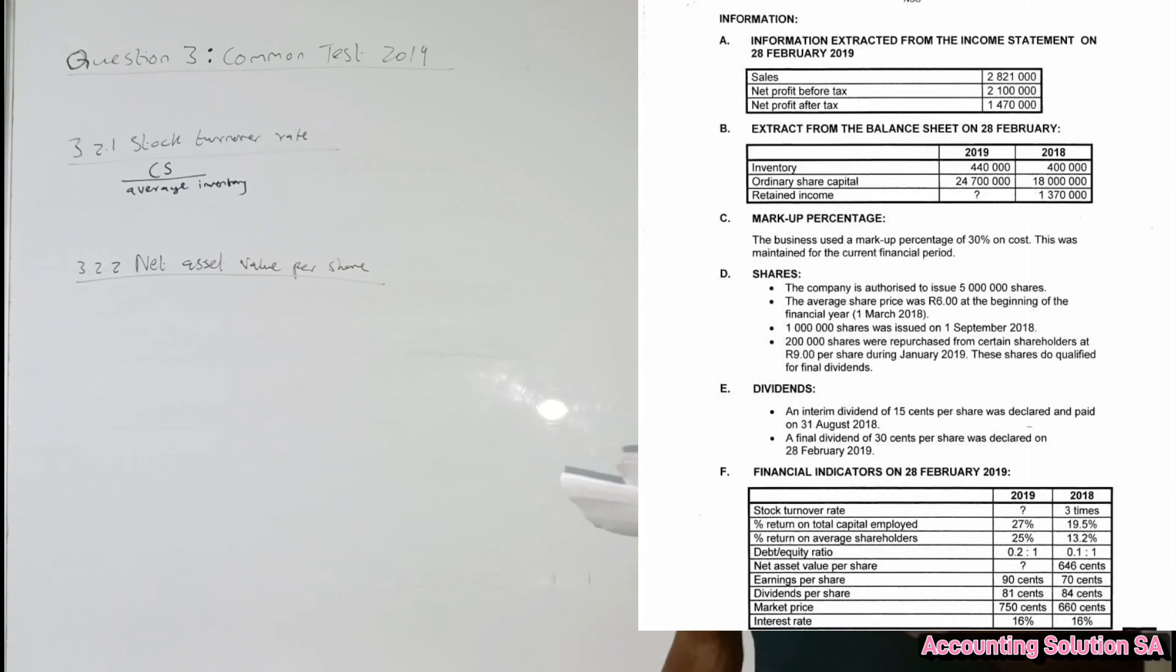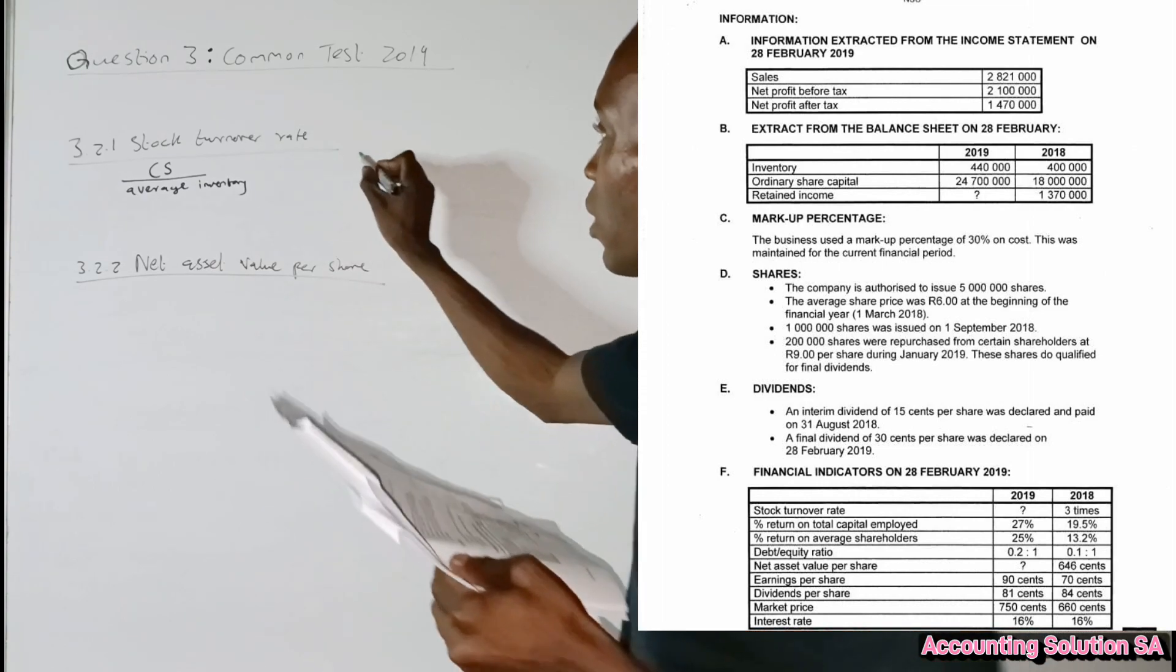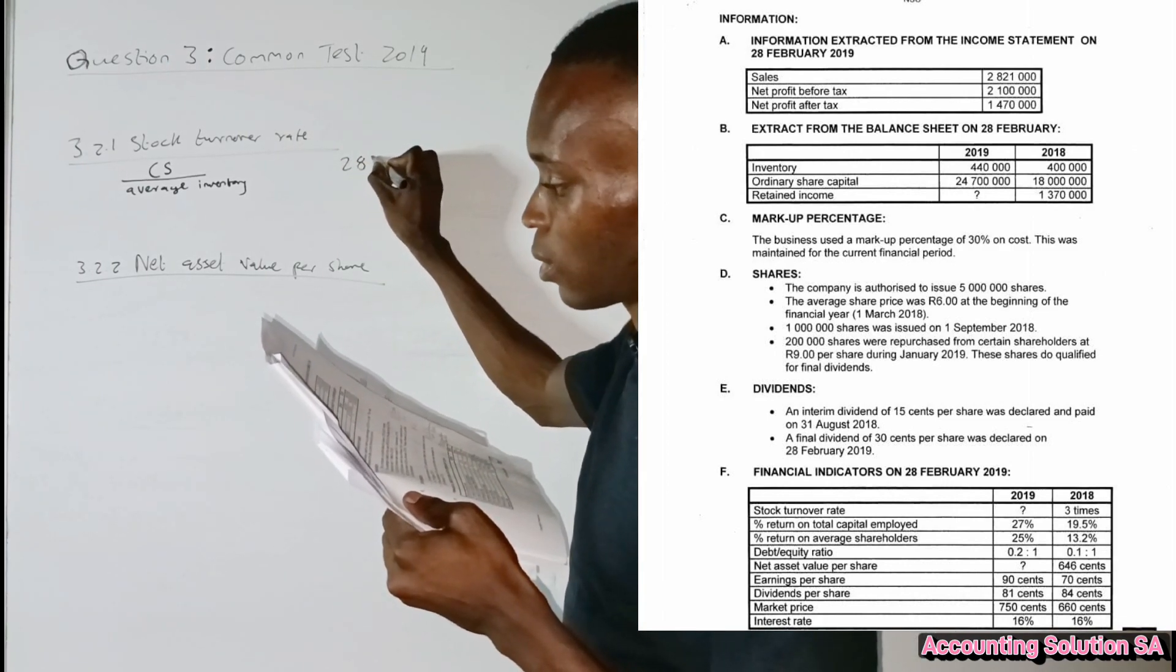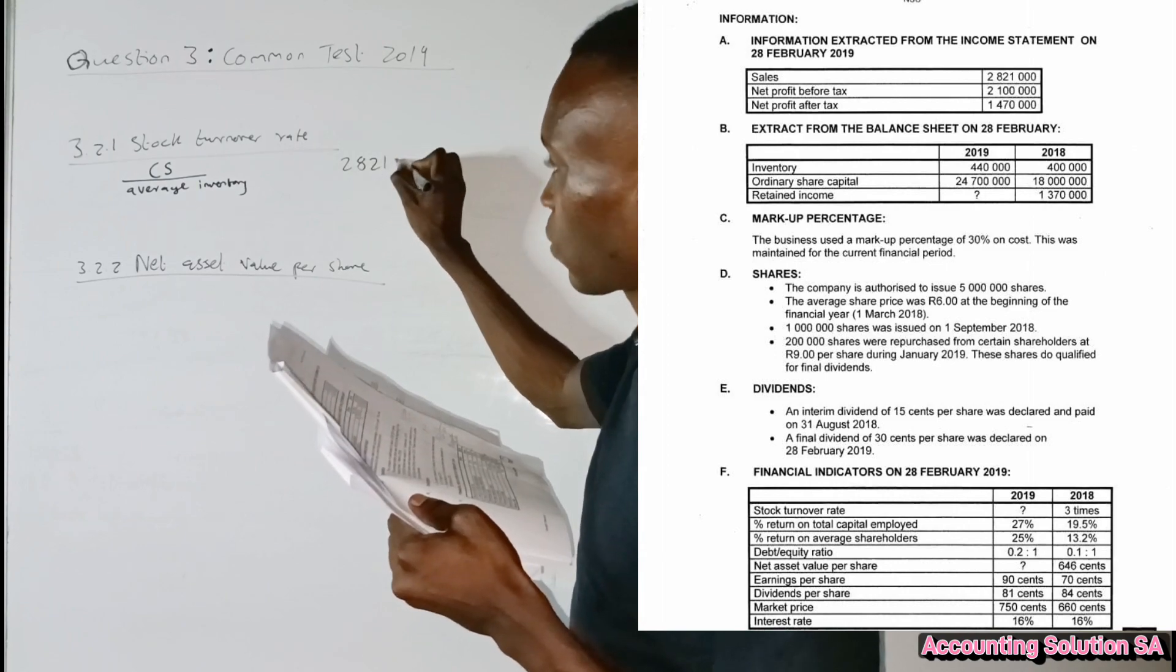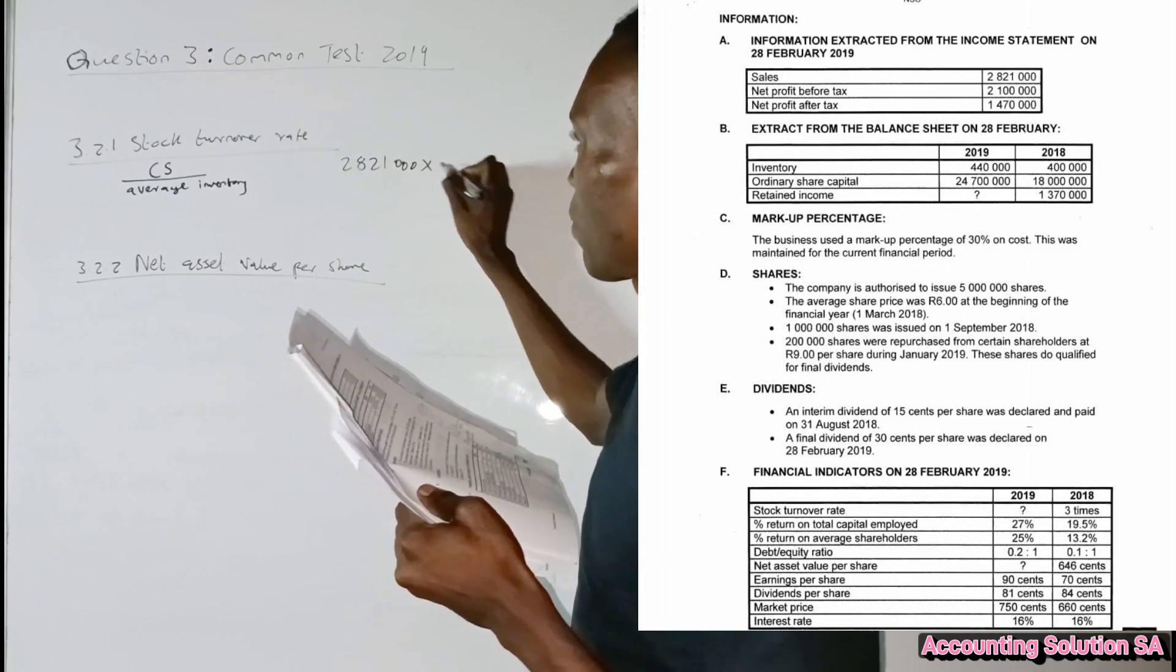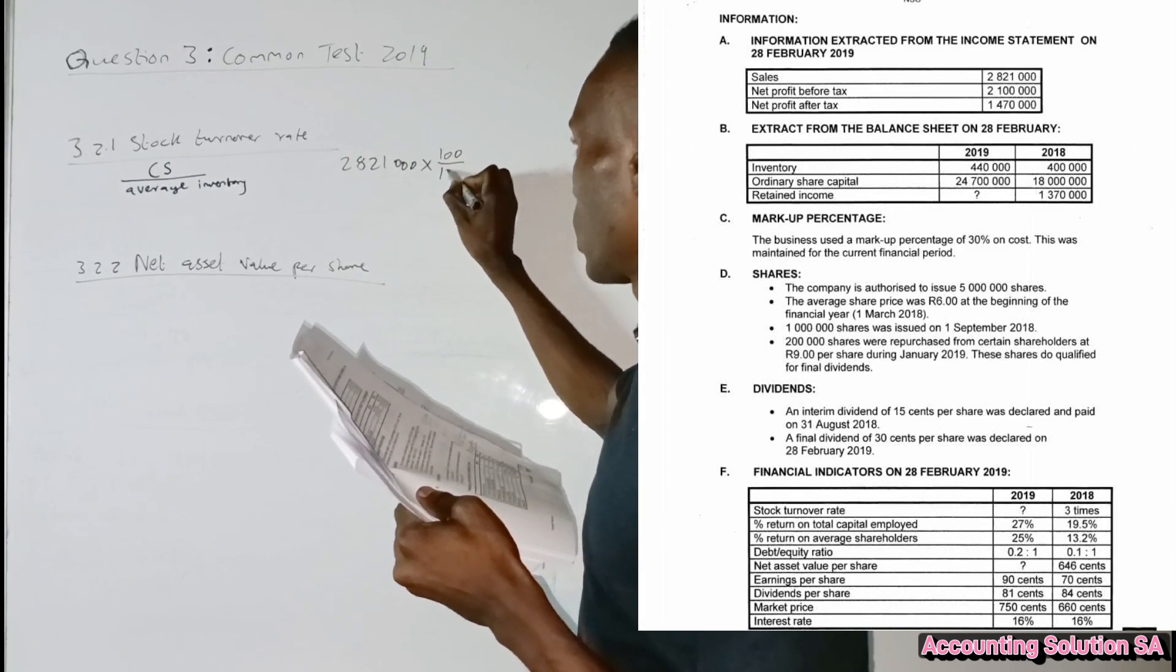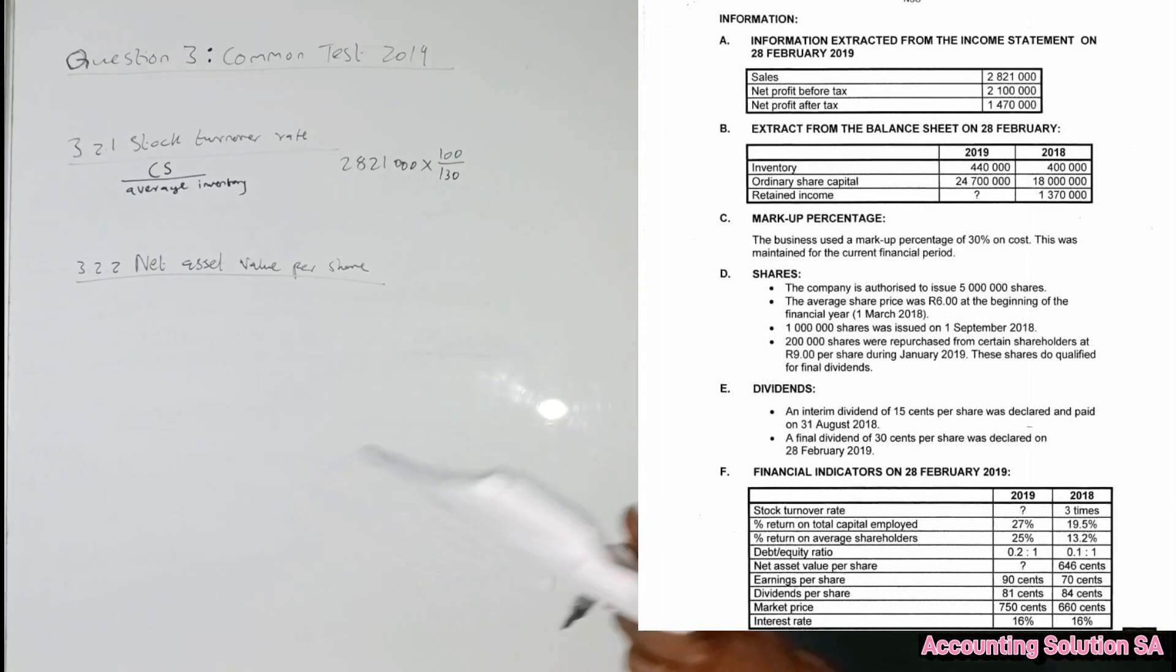Which means that in order for us to convert sales into cost of sales, we have to say sales amount of 2 million 821 thousand, multiply by - we apply markup - 100 over 130. Then it's gonna give us an amount of 2 million 170. 2 million 170 is our cost of sales.